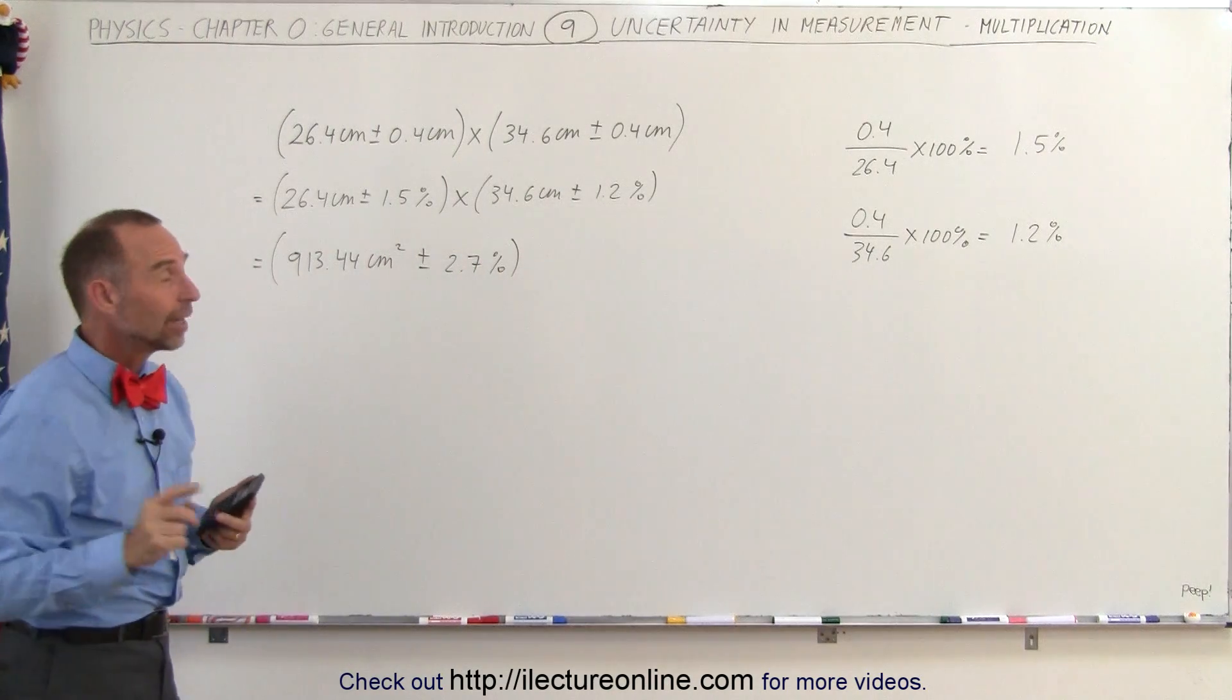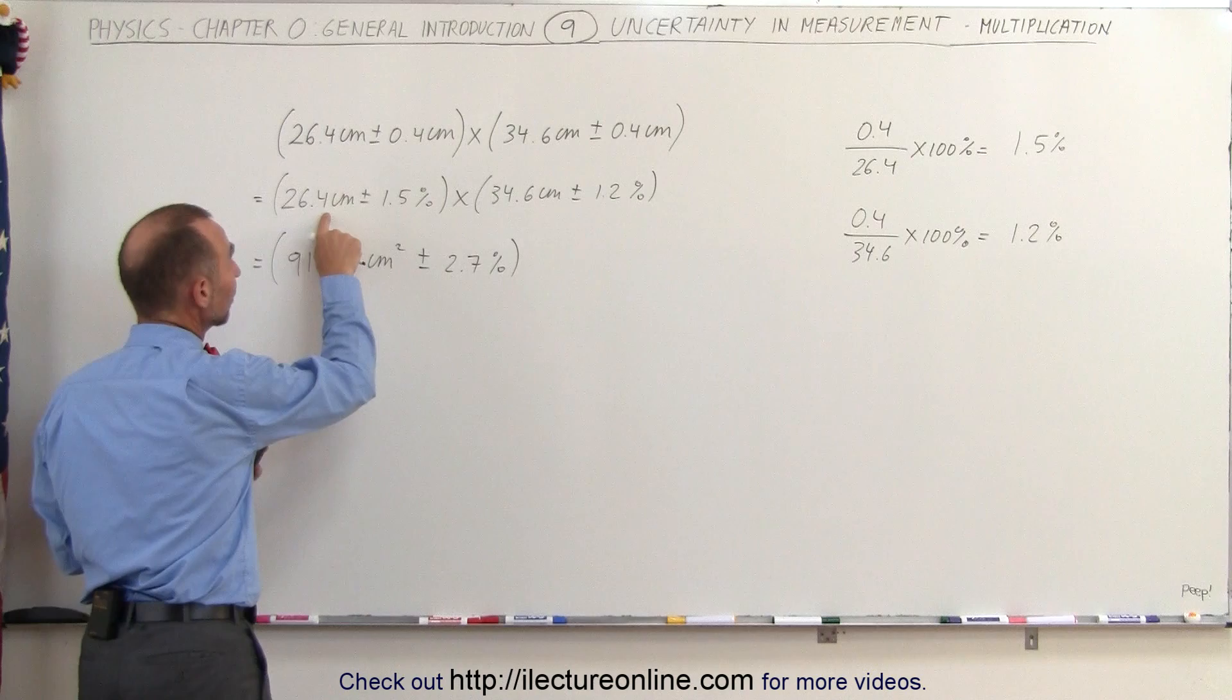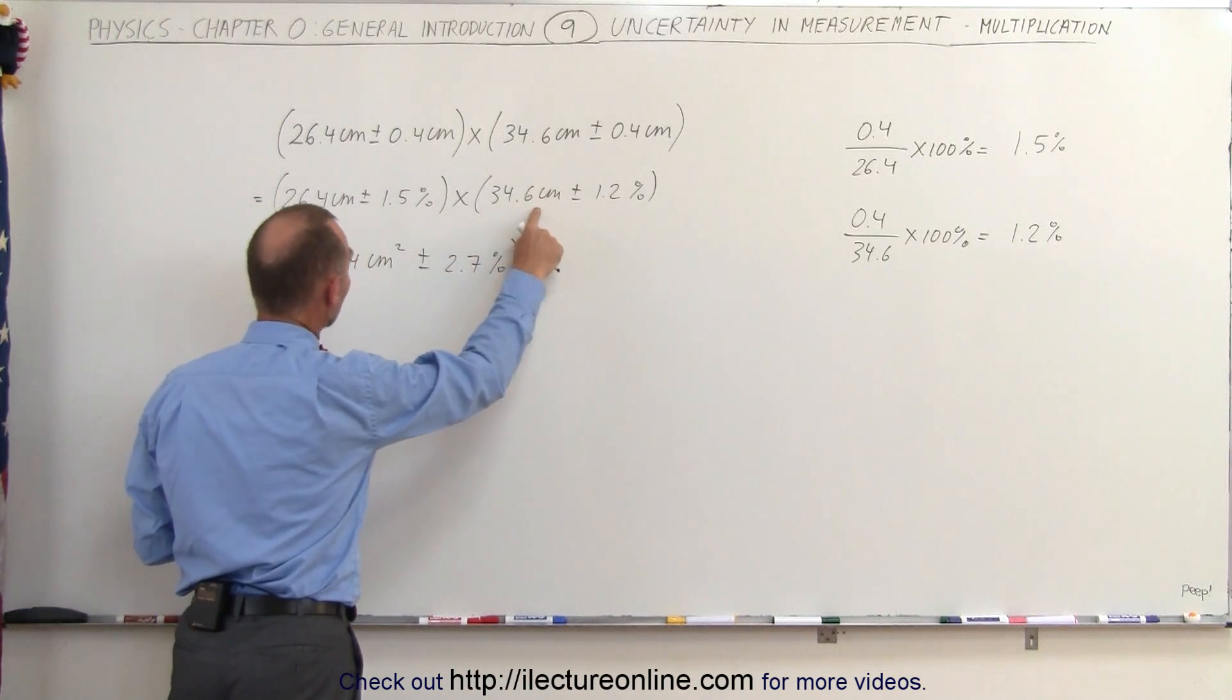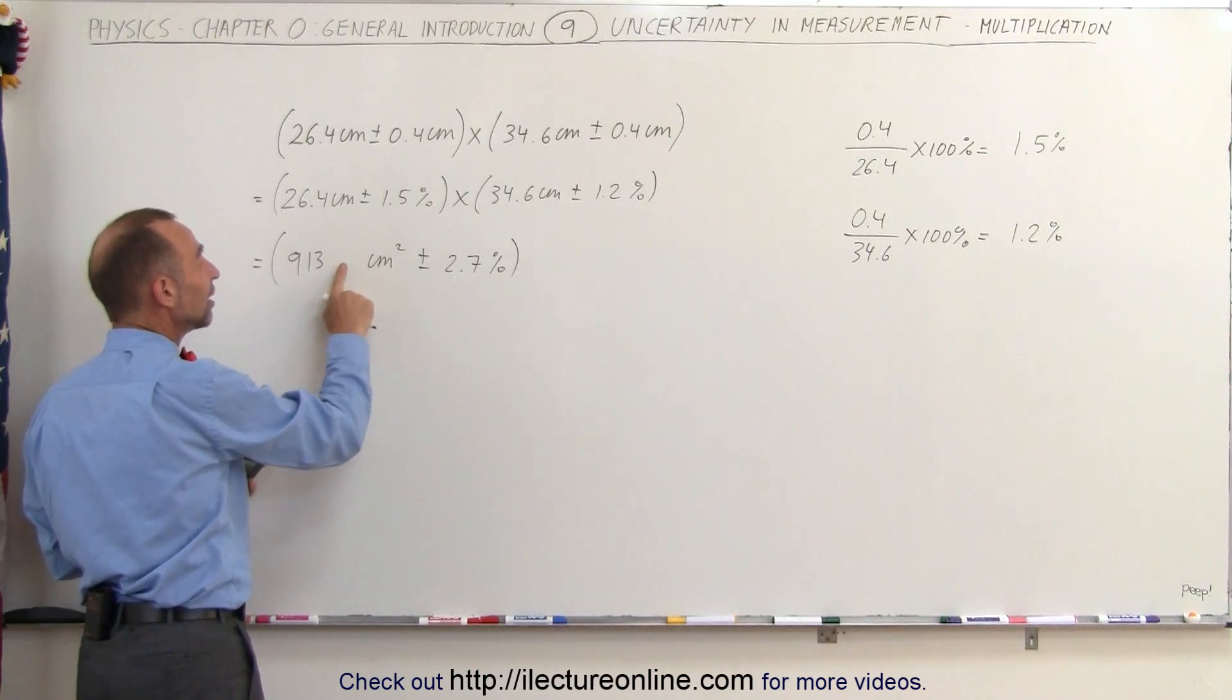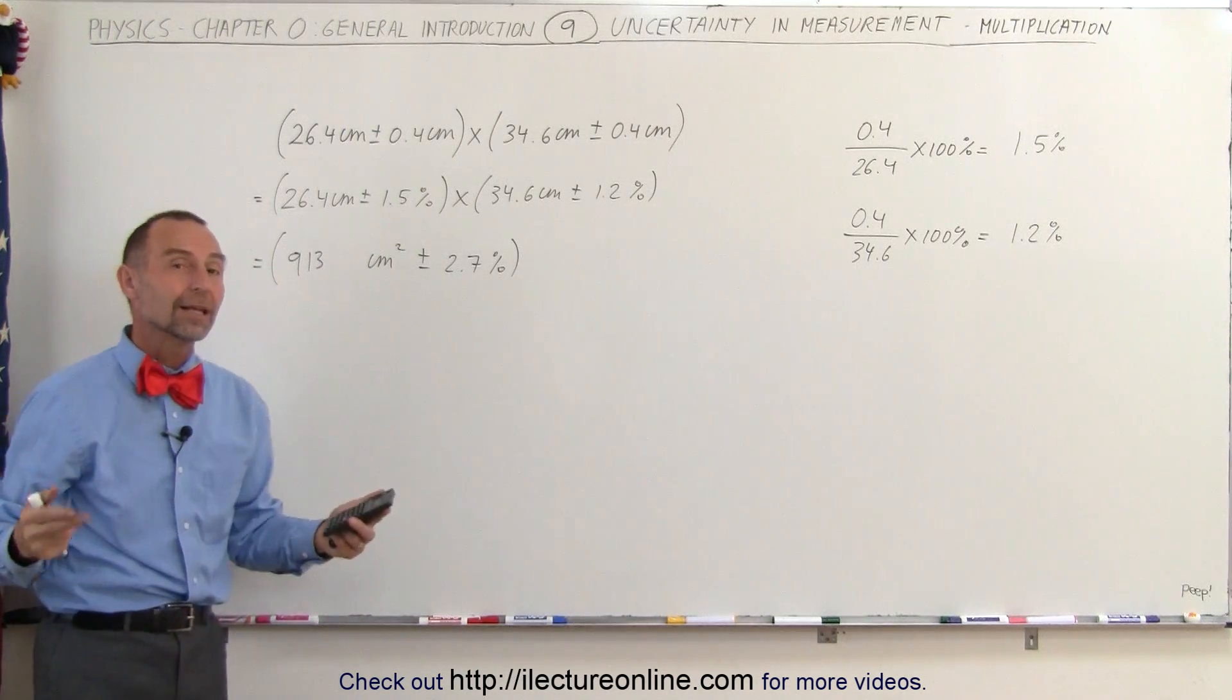Now take a look at this: here we have three significant figures, here we have three significant figures, so here we should only have three significant figures, which means we really should get rid of the 0.44—that's really not meaningful.